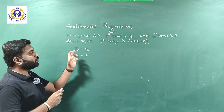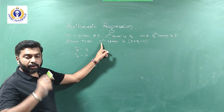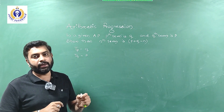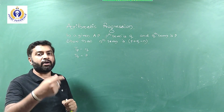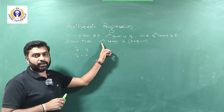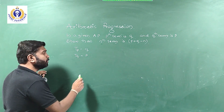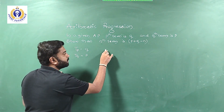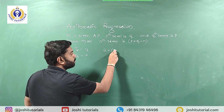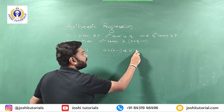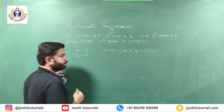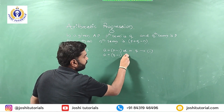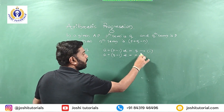Using these two conditions, I will frame equations and then find the nth term. To find the nth term, I need the first term 'a' and the common difference 'd'. Using aₙ = a + (n−1)d: Equation 1 — tₚ = a + (p−1)d = q. Equation 2 — tq = a + (q−1)d = p.